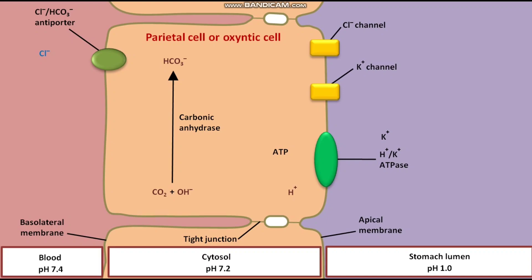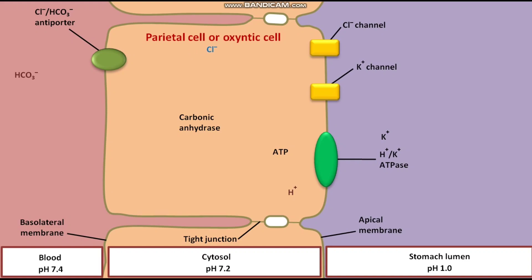The Cl-/HCO3- antiporter is activated at high cytosolic pH. It then catalyzes the export of HCO3- ion across the basolateral membrane in exchange for a Cl- ion. The Cl- ion then passes through the Cl- channel and enters the stomach lumen.